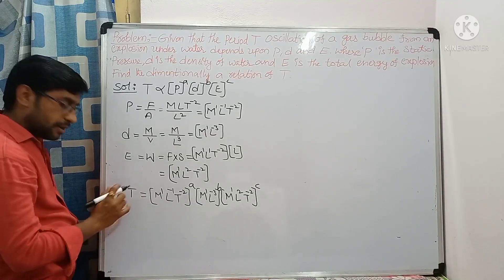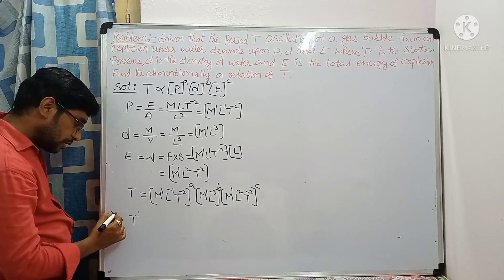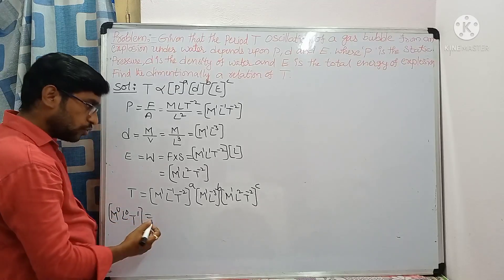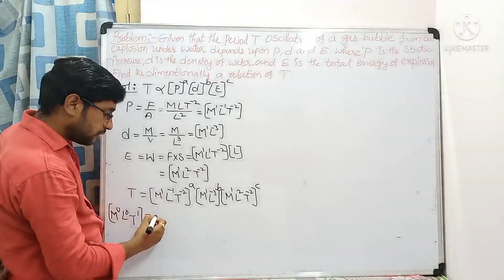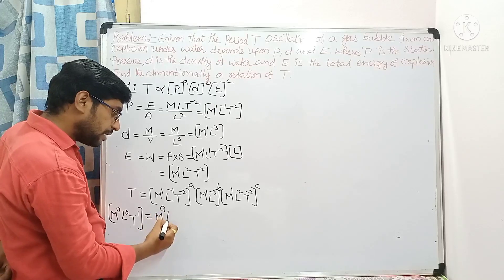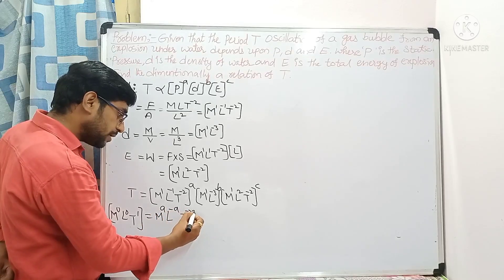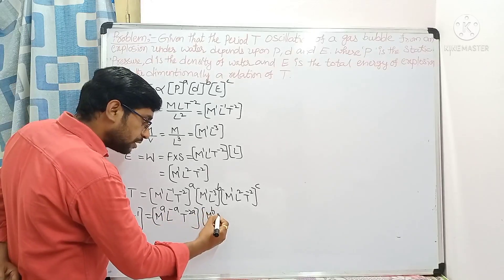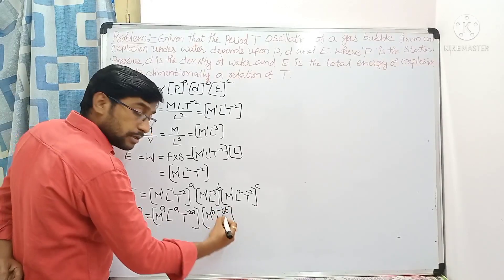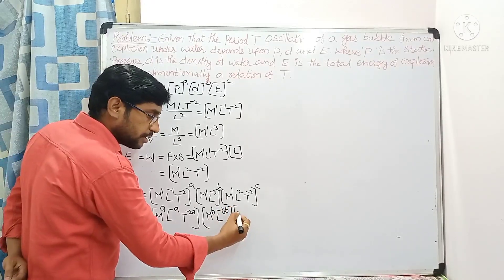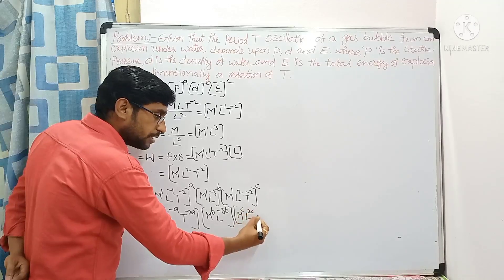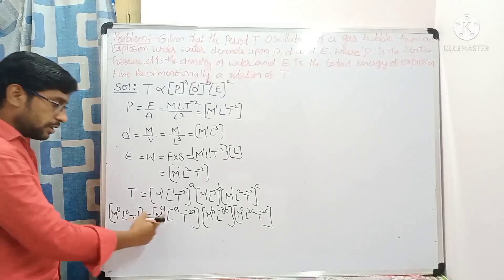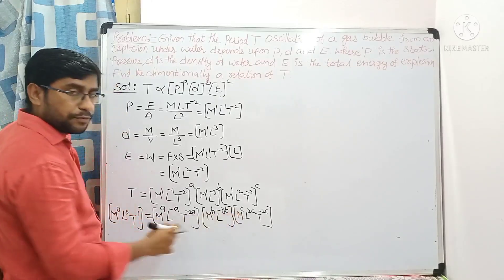T is a time period, so the left-hand side is M to the power 0, L to the power 0, T to the power 1. On the right-hand side, multiplying out: M to the power a, L to the power minus a, T to the power minus 2a — from pressure — and M to the power b, L to the power minus 3b — from density.